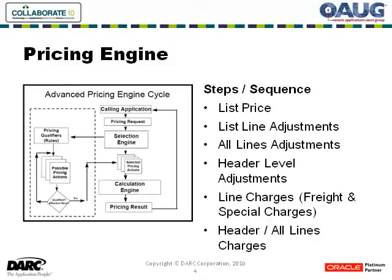First, we need to get a basic understanding of what the pricing engine does. The first thing to realize is that it is an engine. When a pricing call is made — and pricing can be called from Order Management, from Quoting, from Purchasing, or from Contracts — a set of data is passed to the engine. The first thing it wants to do is get a list price, then determine what adjustments may need to be applied to that price for the specific line, and then it moves up to looking at adjustments across all lines and applies header-level adjustments.